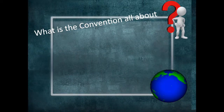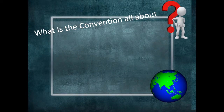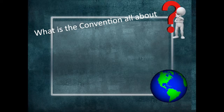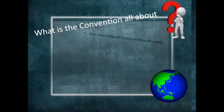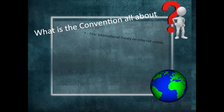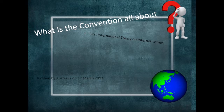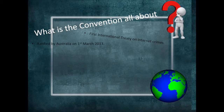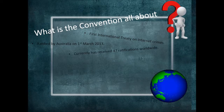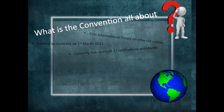So what is the Convention all about? The Council of Europe's Convention on Cybercrime was the first international treaty on crimes committed via the internet and other computer networks. It was ratified by Australia on the 1st of March 2013 and currently has received 47 ratifications worldwide.